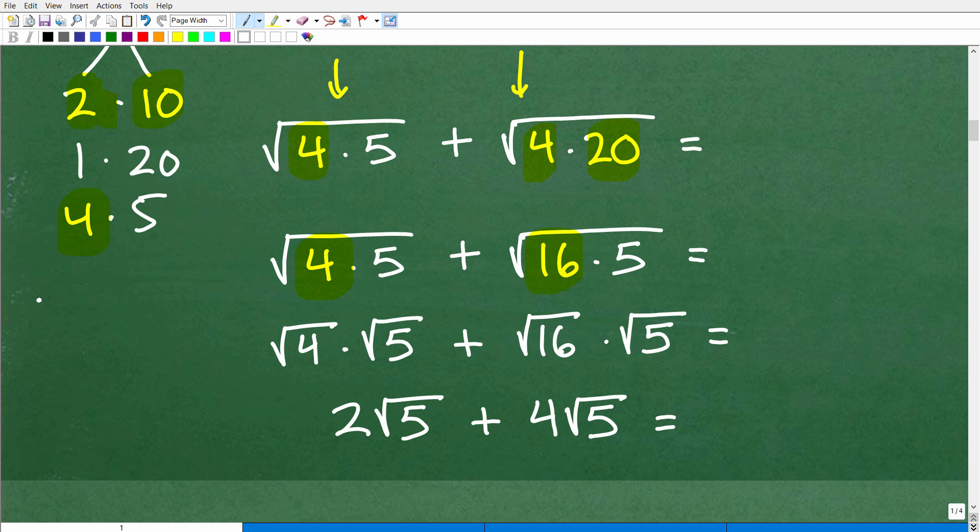Well, this is where this property of the square root of A times B equaling the square root of A times the square root of B. I can basically split apart this one big square root and write this product as the product of two individual square roots. So the square root of 4 times 5 is the same thing as the square root of 4 times the square root of 5.